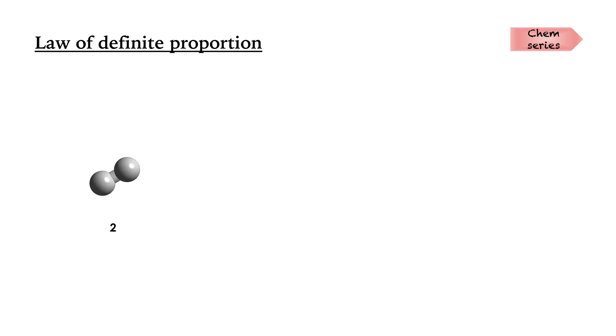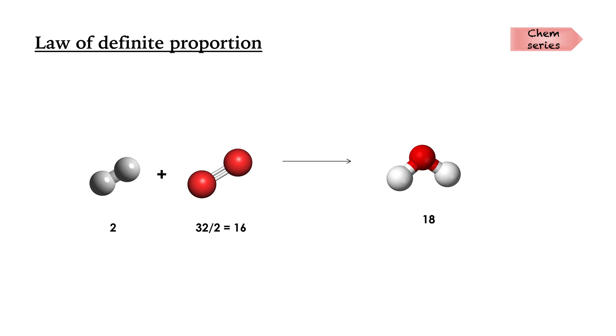Coming to the law of definite proportions, also called Proust's Law or the law of constant composition: a given chemical compound always contains its component elements in a fixed ratio, regardless of its source or method of preparation. For example, in H₂O, hydrogen of mass 2 combines with oxygen of mass 32. Per oxygen atom the mass unit is 16, so H₂O has a mass of 18 (16 + 2). The mass of oxygen that reacts is always 8 times the mass of hydrogen — we cannot alter this ratio no matter how hard we try.